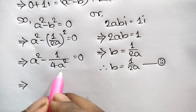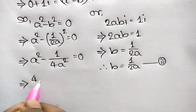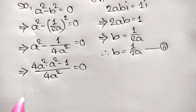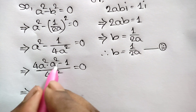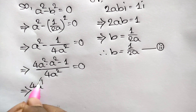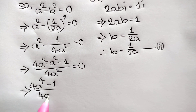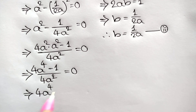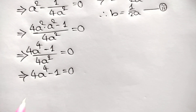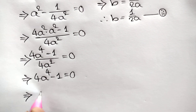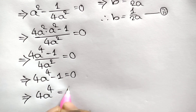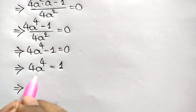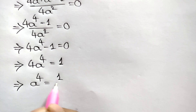The LCM is 4a², so multiplying through: 4a²·a² − 1 = 0, giving 4a⁴ − 1 = 0. Taking −1 to the right side: 4a⁴ = 1. Dividing both sides by 4: a⁴ = 1/4.